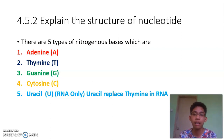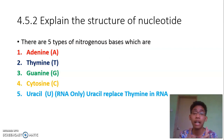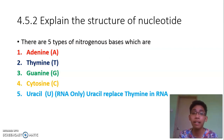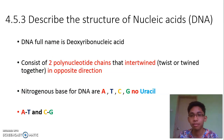In RNA, there is only adenine, guanine, cytosine, and uracil. There is no thymine in RNA. In DNA, there is no uracil — only adenine, thymine, guanine, and cytosine.